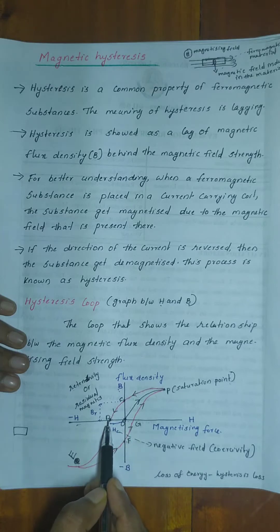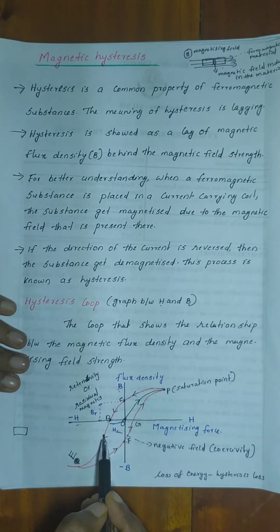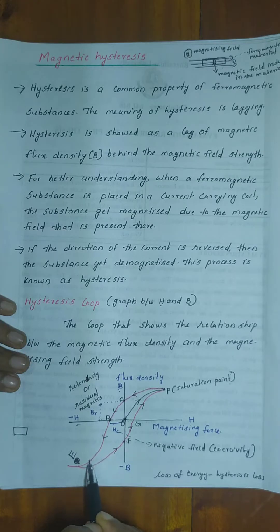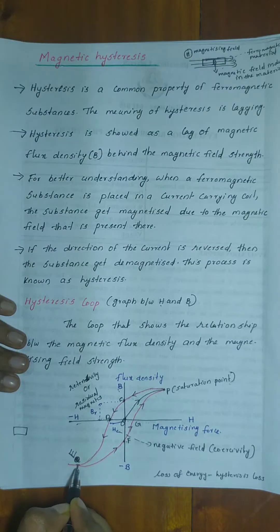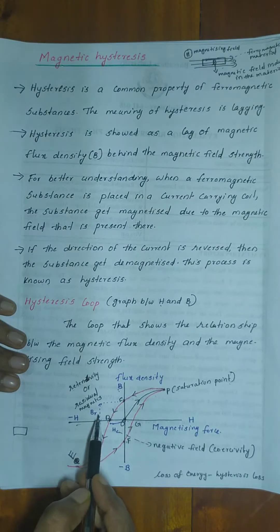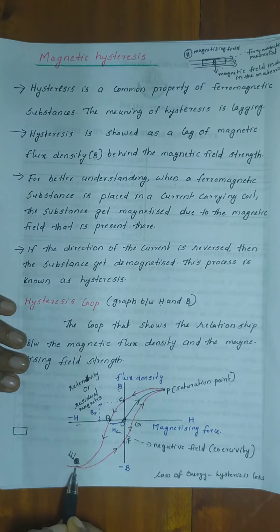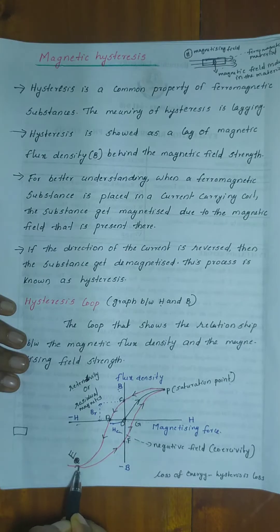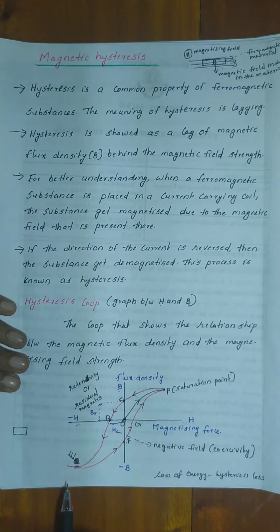We then move the magnetizing force in the opposite direction and increase it. As we increase the magnetic force in the reverse direction, the flux density decreases. Continuing to increase the reverse magnetic force takes the material to the reverse saturation point.